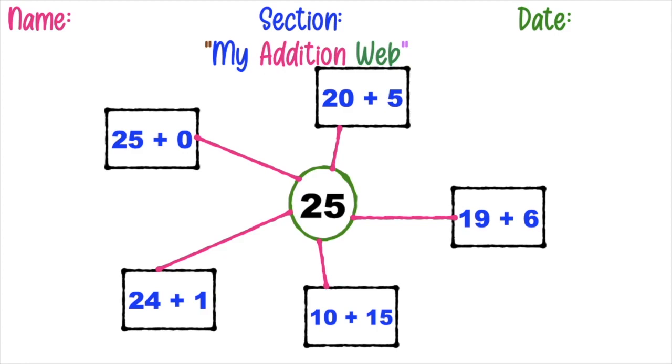Again, children, give five addition sentences whose sum is the number at the middle. Is that clear? Just a reminder, you may use your colored markers, colored pens, or even crayons in doing and writing your Performance Task 2.1.